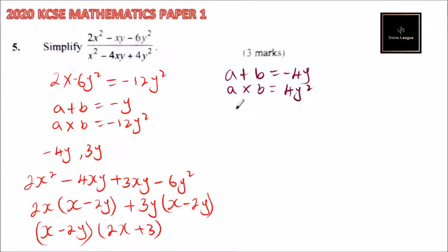So with that, we can say this is minus 2y and minus 2y. When you multiply, you will be able to get 4y squared. When you add, you should get minus 4y.